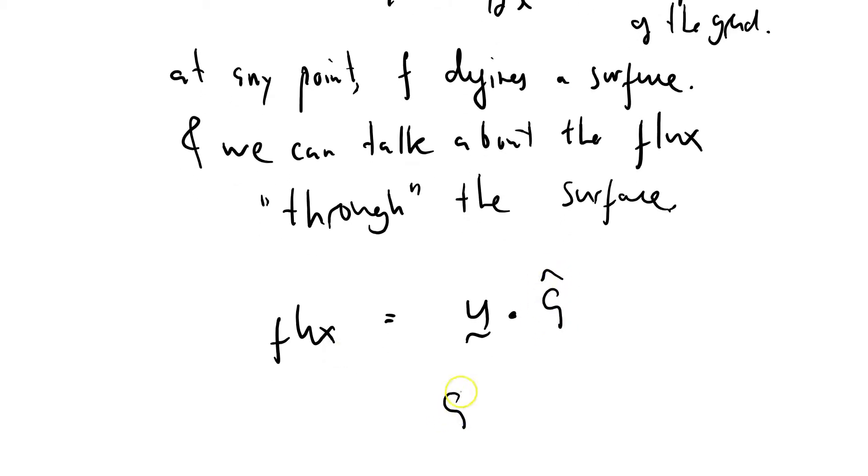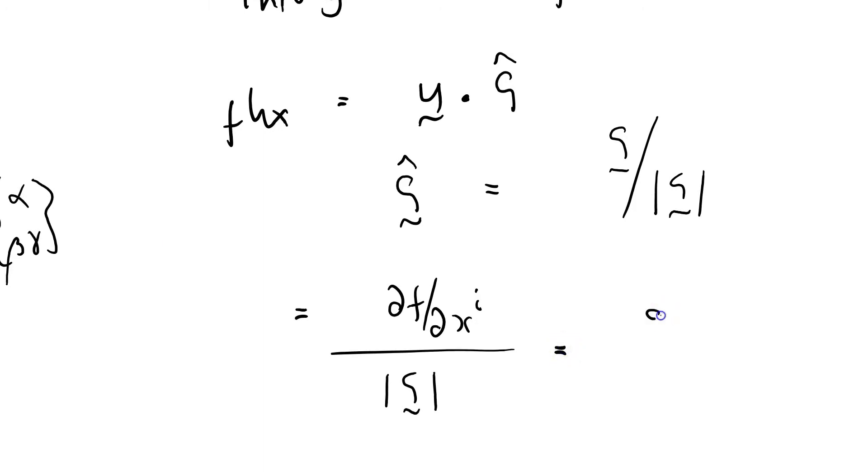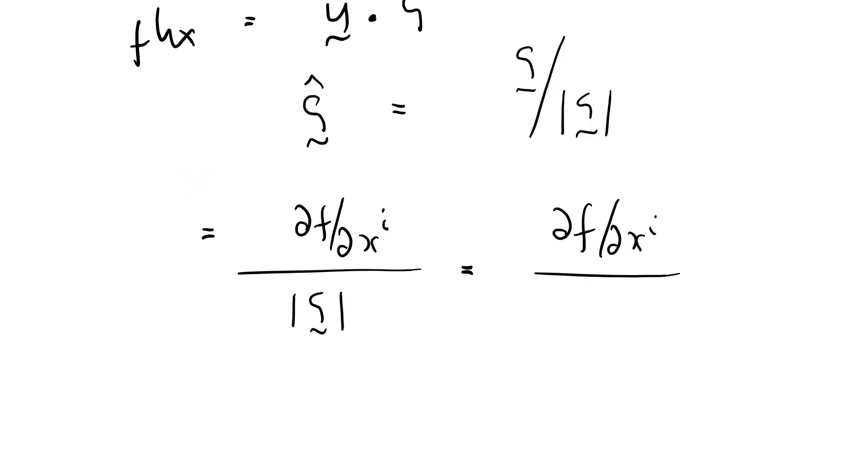ĝ, where ĝ as a vector equals the gradient divided by the magnitude of the gradient. So that's equal to ∂f/∂xⁱ. Remember, we don't need any Christoffel symbols because it's just a scalar. If we were differentiating a vector, and we'll see this later in the course, if we were differentiating a vector we would need to start fooling around with Christoffel symbols as well. But we don't need that for a gradient. Divided by the modulus of the gradient. Well, what's the modulus of the gradient? Well, that's just ∂f/∂xⁱ.